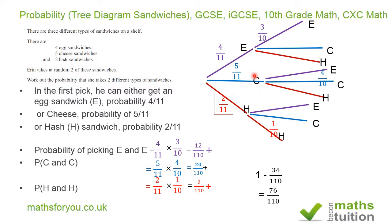Alternatively, we could do this the direct way by listing every combination of different sandwich types. We could pick an egg sandwich then a cheese sandwich: 4 over 11 times 5 over 10 equals 20 over 110. Or an egg sandwich then a hash sandwich: 4 over 11 times 2 over 10 equals 8 over 110. Or a cheese sandwich then an egg sandwich: 5 over 11 times 4 over 10 equals 20 over 110.